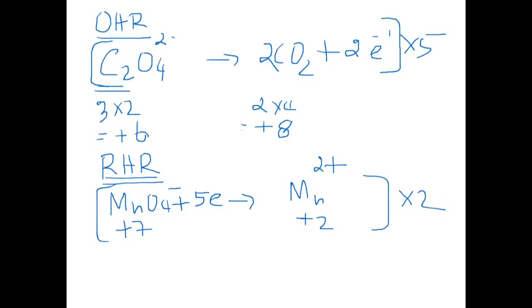So now you have plus 7 times 2 makes it plus 14, which means we need 10 electrons. And here that will give you 2 manganese ions and makes it times 2, which gives you plus 4.